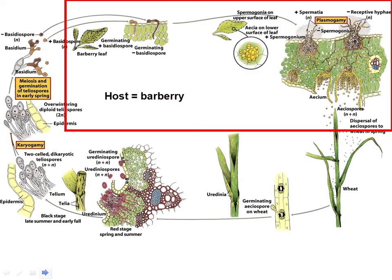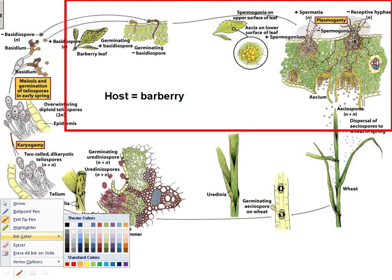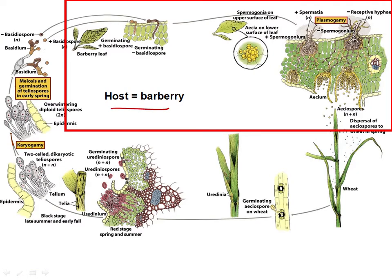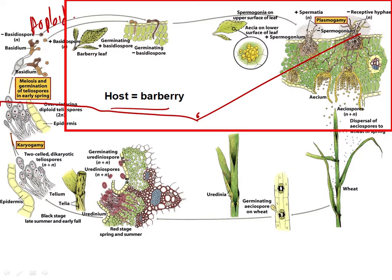The barberry is one host, and almost all of the haploid period of the life cycle occurs there. Up until the infection of the barberry leaf, the plant is in the haploid stage. Here are the basidiospores, and they're going to land on the barberry leaf and grow into it with our haploid primary mycelium.